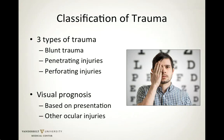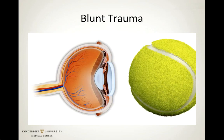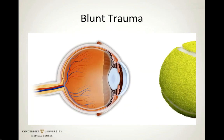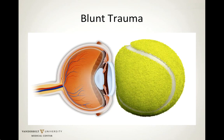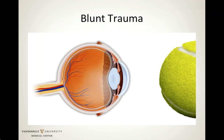There are typically three types of trauma: blunt, penetrating, and perforating. Another type often described is intraocular foreign bodies, but that won't be discussed in this video. Visual prognosis following trauma is based on the patient's presentation and whether other ocular injuries are present. In blunt trauma, an object does not pierce the eye but may cause a closed globe injury or an open globe rupture at the weakest point of the scleral wall, momentarily flattening the eye and stretching or displacing intraocular structures.